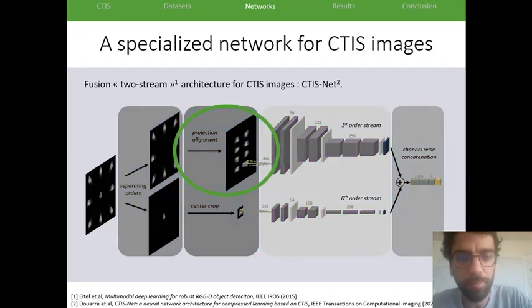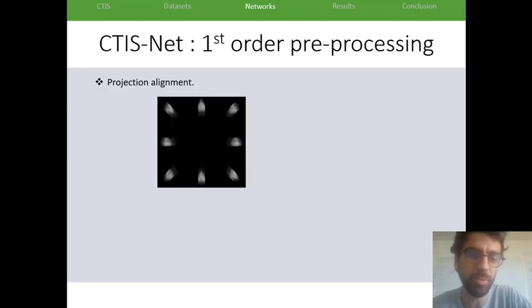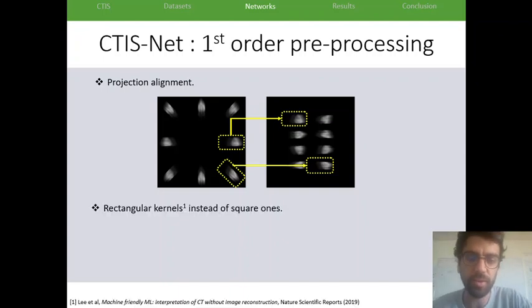So to speak a little bit more about the preprocessing that we implemented, in particular on the first order image. The first thing we did was align the projections, because the projections are going all over the place. And by simple CV operations, we just rotated them back along the horizontal axis. And as a complementary to this first operation, we used rectangular kernels instead of square ones.